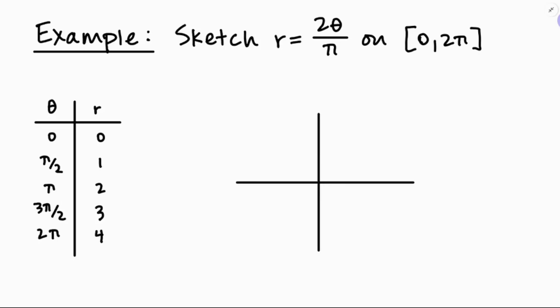Now I can start to sketch the graph. The first point is theta equals 0, r equals 0, which is just at the origin. Then theta equals pi over 2, r equals 1 — that's 1 unit straight up. Then theta equals pi, r equals 2 — two units to the left. Theta equals 3 pi over 2, r equals 3 — three units toward the bottom of the unit circle. And when theta equals 2 pi, I should be 4 units away from the origin. The more I rotate, the farther I go away from the origin — that's going to be an outward spiral.